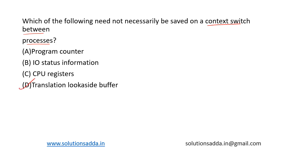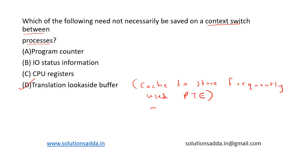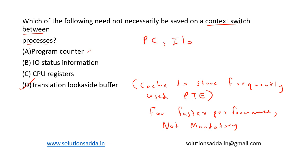The correct answer is option D, Translation Look-aside Buffer. It is just a cache to store frequently used page table entries, used for faster performance and not mandatory to save. When a context switch happens, we need to save the program counter value, the I/O status, and CPU register values.